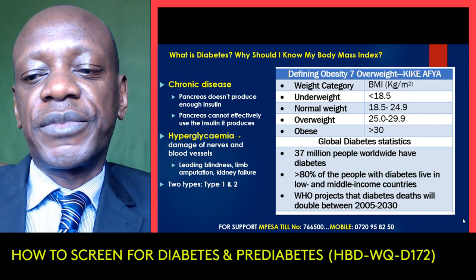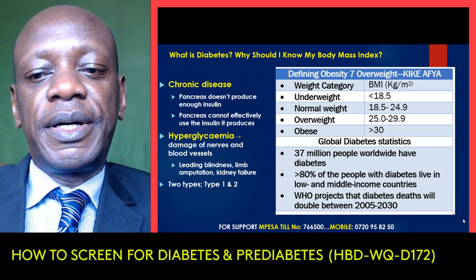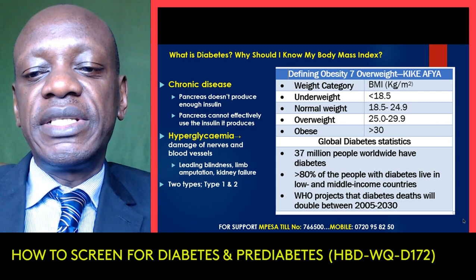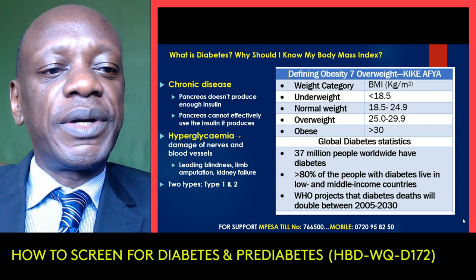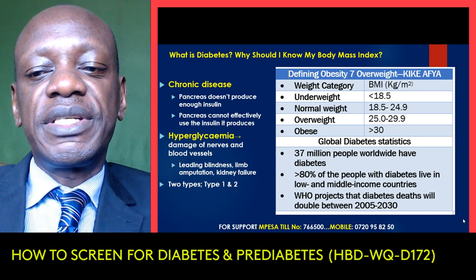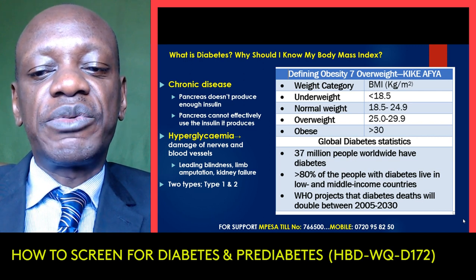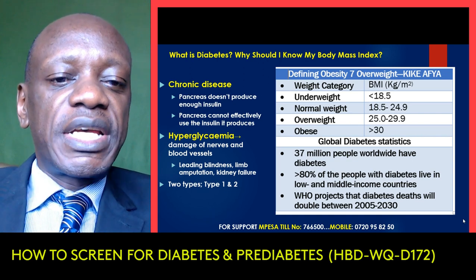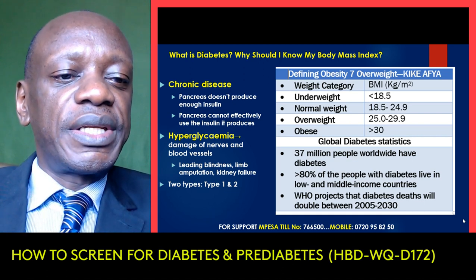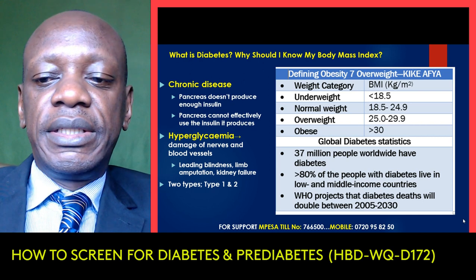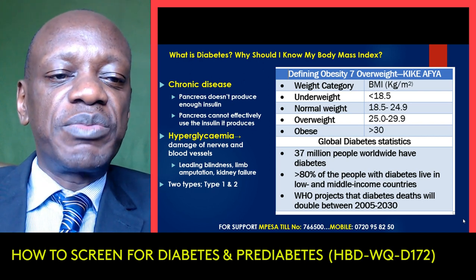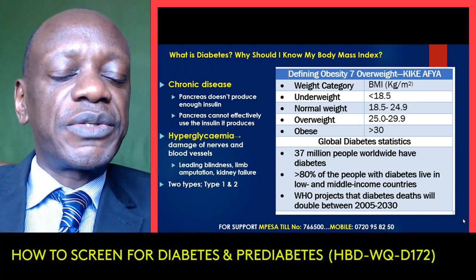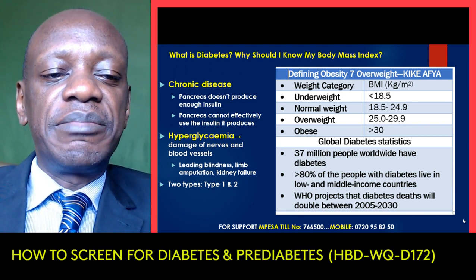In type 1 diabetes, the body doesn't make insulin and patients have to inject themselves with artificial insulin. In type 2 diabetes, the pancreas doesn't make enough insulin and the insulin it makes doesn't work very well. With increase in childhood obesity, we are beginning to see type 2 diabetes in this age group — it's not just for adults. In the long term, it causes hyperglycemia, which can lead to damage of blood vessels and nerves, leading to blindness, limb amputation, as well as kidney failure.